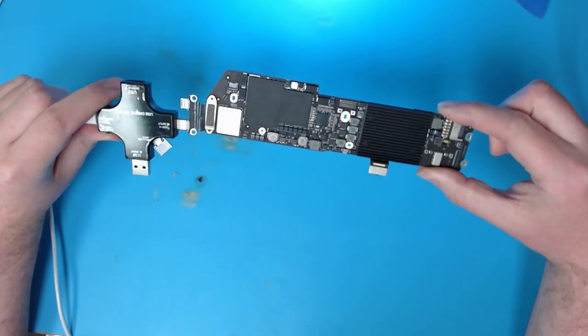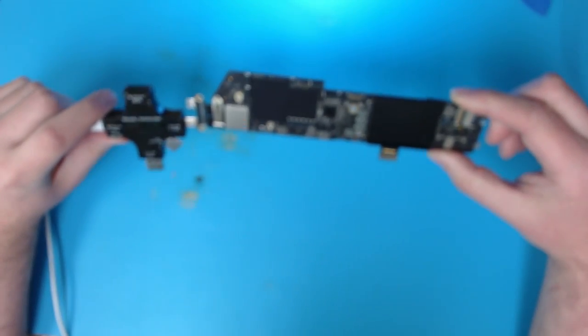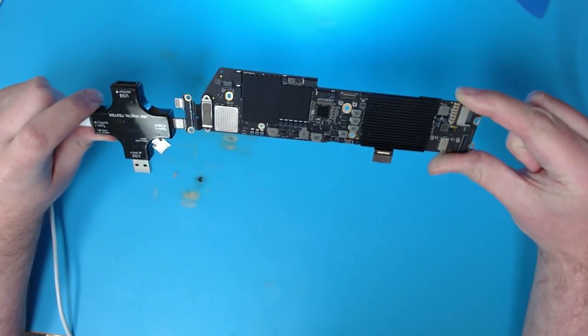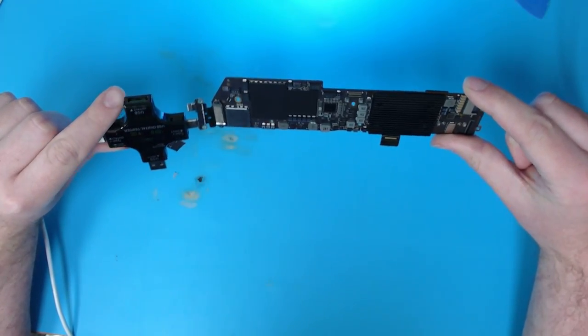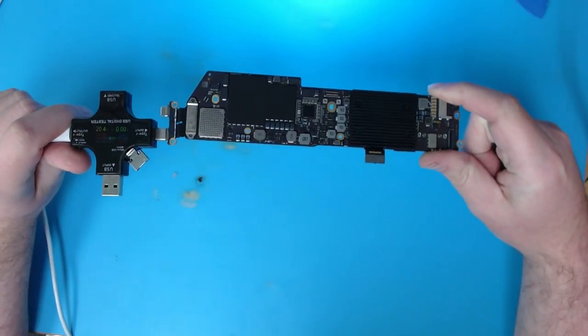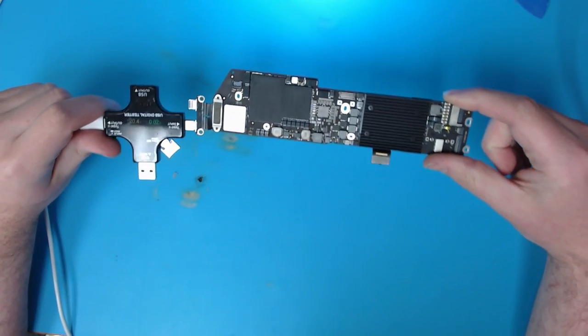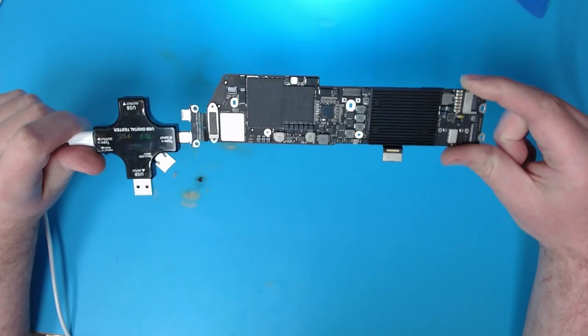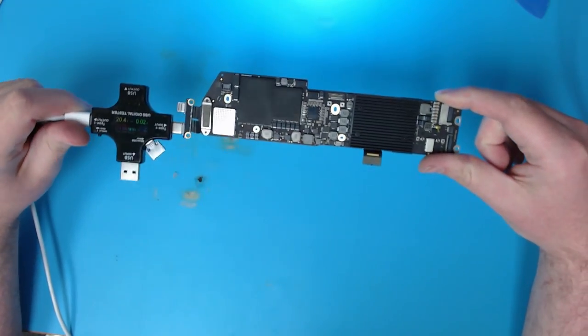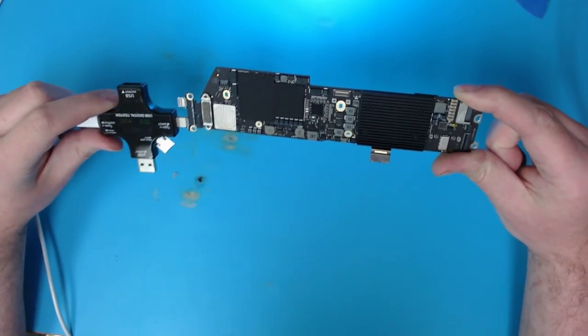Option number two is there is a short on a subrail somewhere. That is oftentimes the most fixable fault that will present like this. Or option number three, the T2 is having issues booting bridge OS, either from a dead NAND or a dead T2. Now unfortunately, a lot of these boards that have this issue will end up being NAND or T2 issues.